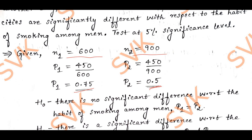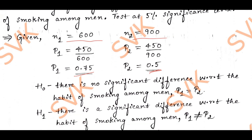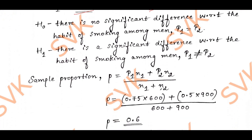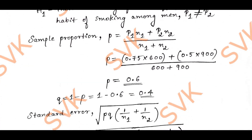Then define the null hypothesis: there is no significant difference with respect to the habit of smoking among men, i.e., p1 equals p2. The alternate hypothesis is p1 not equal to p2. After defining both hypotheses, find the combined sample proportion using the formula: p equals (p1·n1 + p2·n2) divided by (n1 + n2). Substituting all values, we get p equal to 0.6.